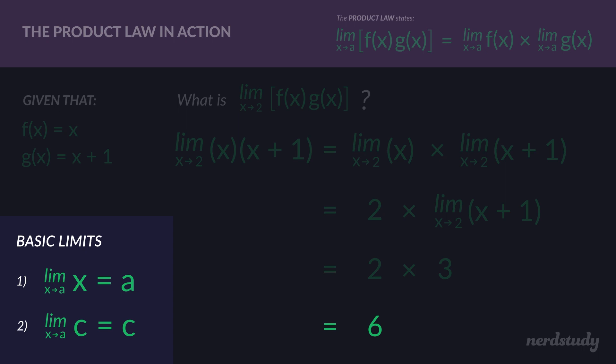So in the end, through the use of the product law — and we also ended up using the sum law, good thing we learned it — we were completely able to find the limit as x approaches 2 without even drawing the graph at all. We found that the limit is 6 for this graph.